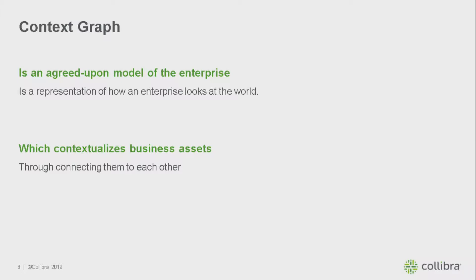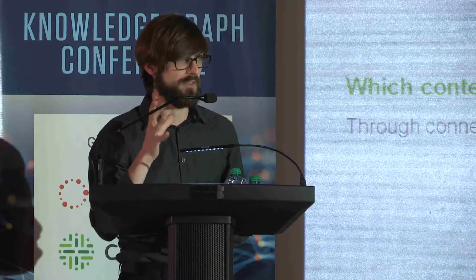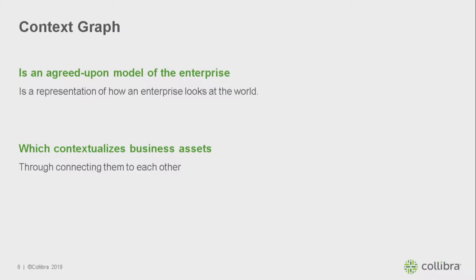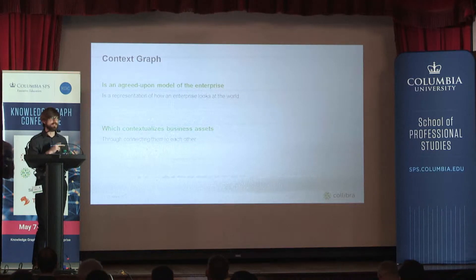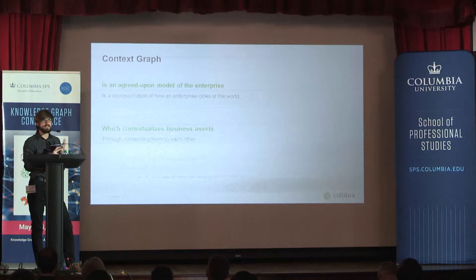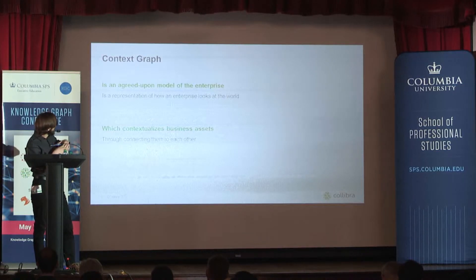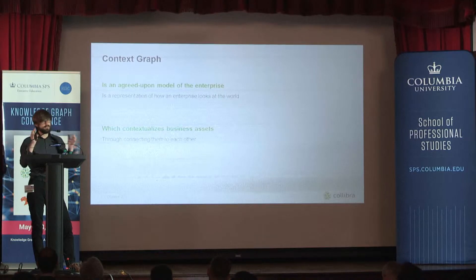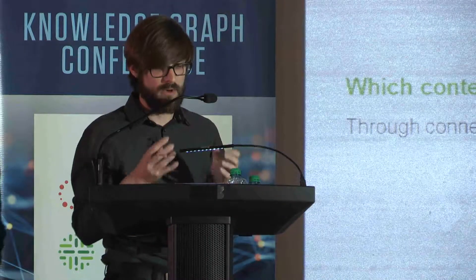You can think of it another way: give some agency to the enterprise and say the enterprise itself has a knowledge representation of how the world around it works. The second important thing is that information is contextualized. This happens because we don't just have one person's idea of the company in this graph, but different people. They create more and more connections around certain business assets — which can be data sets, business terms, reference data sets, policies, anything that lives in a company. They all give more and more context to each other because people talk to each other, carrying connections between different departments so there's more value coming from all of these different data assets.